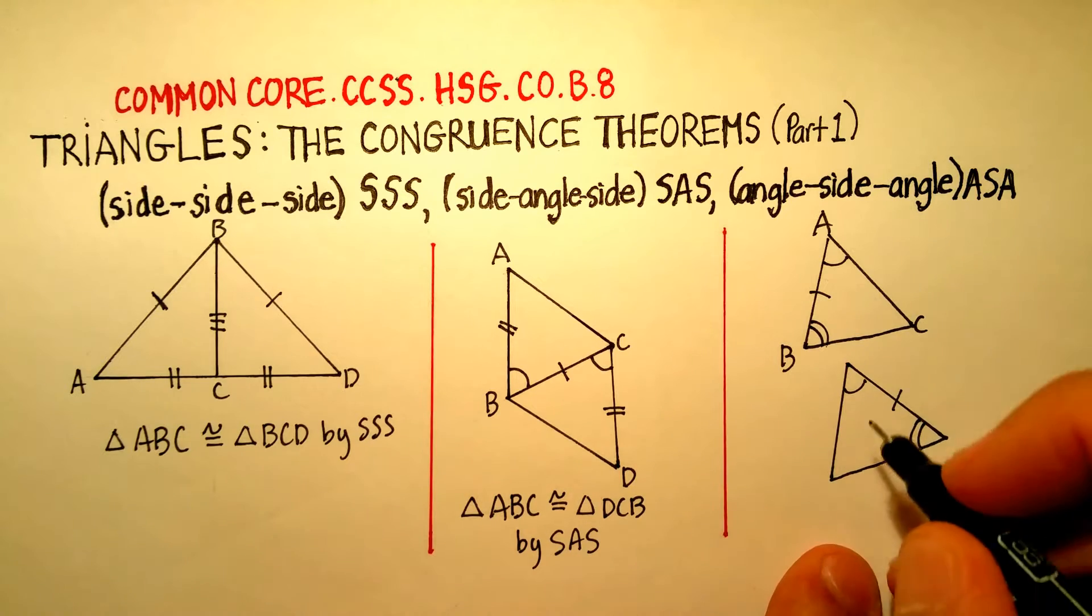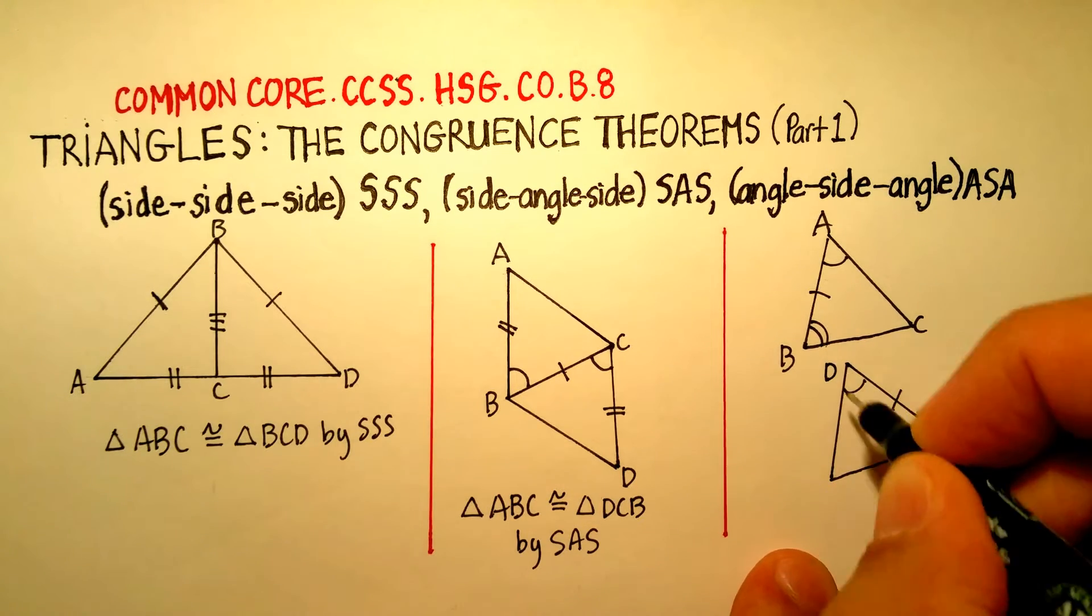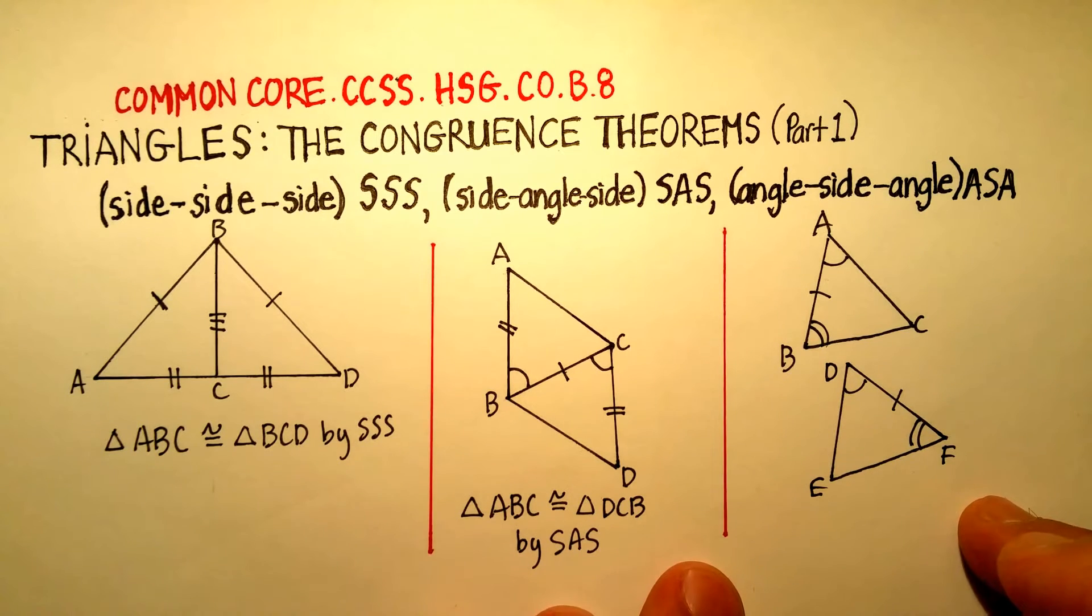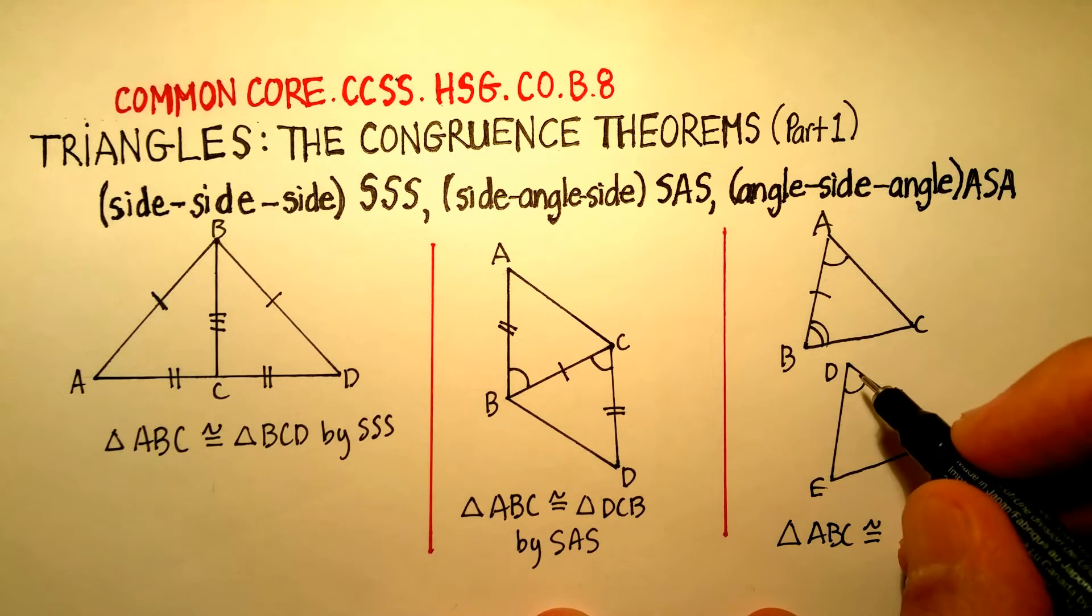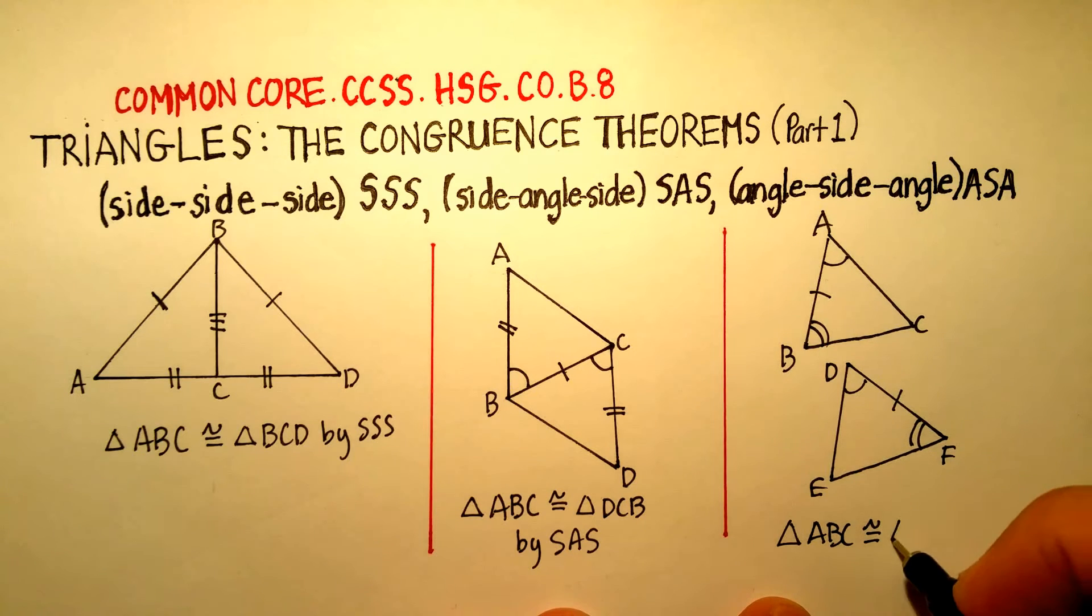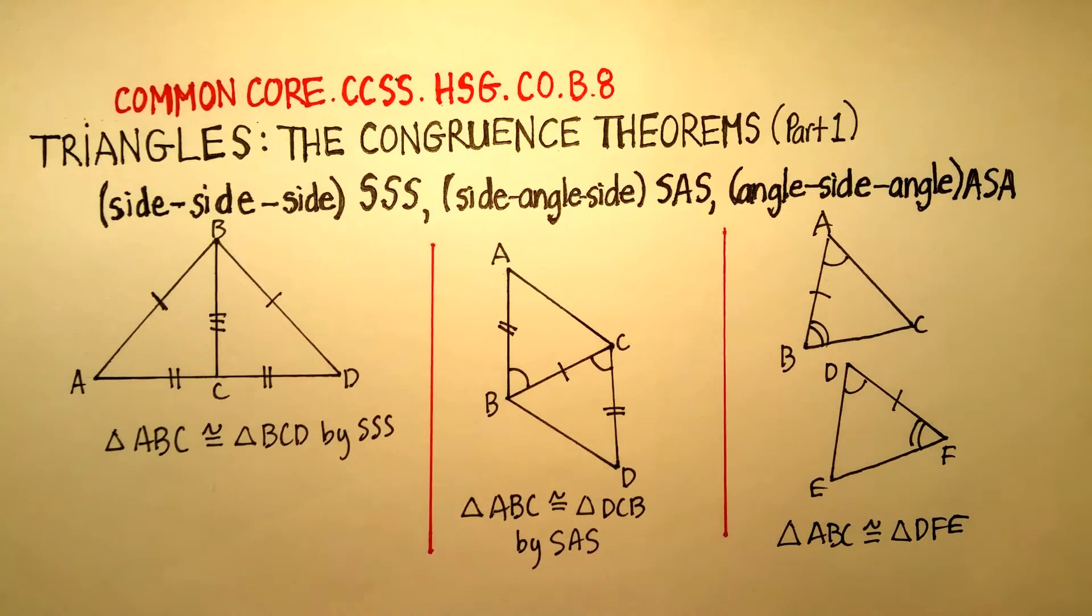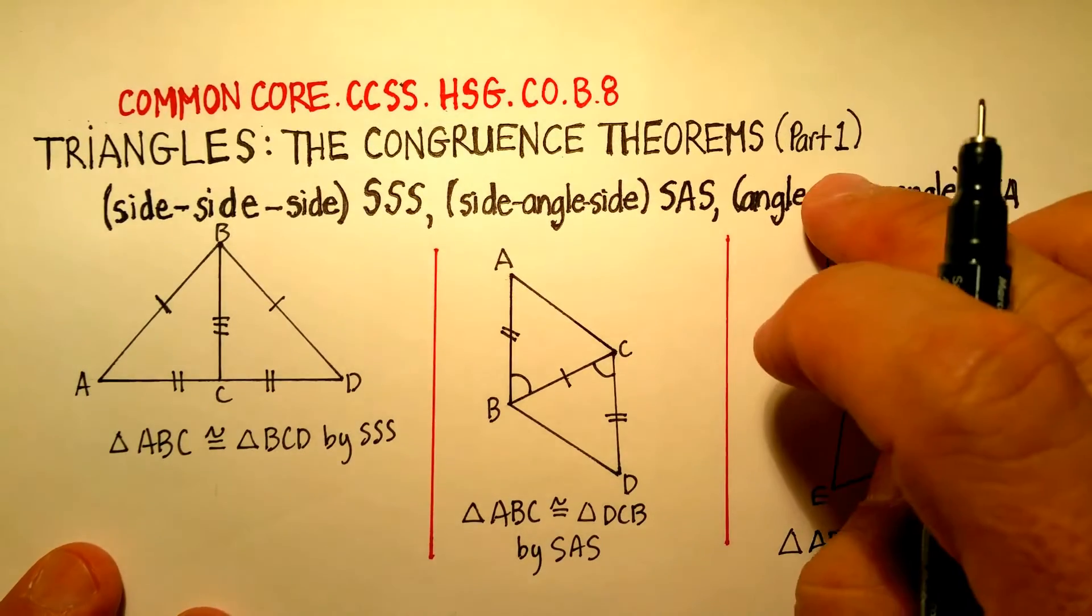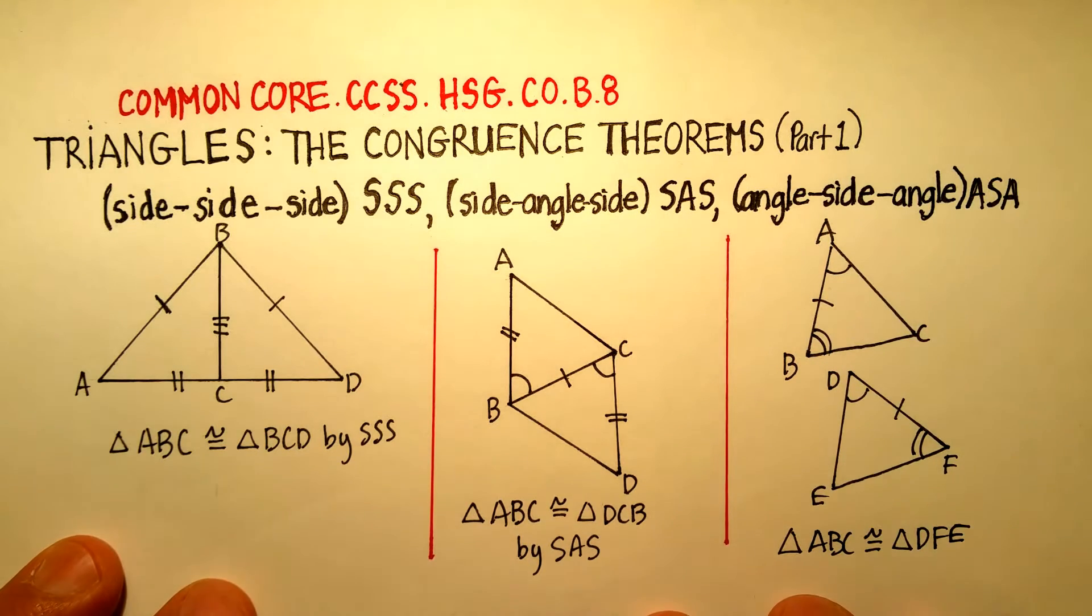So angle-side-angle. And we'll call this one DEF. And we would say, therefore, that triangle ABC is congruent to triangle DFE. So that's briefly what the three congruence theorems are. And this is part one. There's three others that we'll talk about in another video.